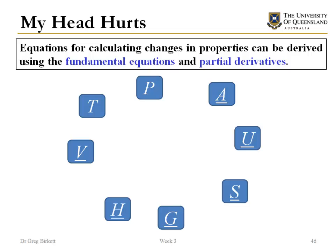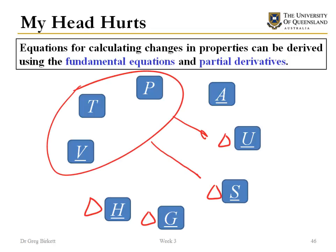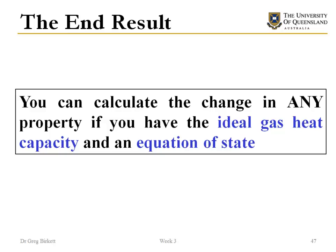And the equations that we use to calculate the change in different properties—so if we're interested in the change in U, the change in S, the change in enthalpy, and then later on we'll be interested in the change of Gibbs free energy—we can derive these by using our fundamental equations and using partial derivatives. That then allows us to use this property group to then calculate these changes. And so from all this it means that you can calculate the change in any property as long as you have the ideal gas heat capacity and you have an equation of state.